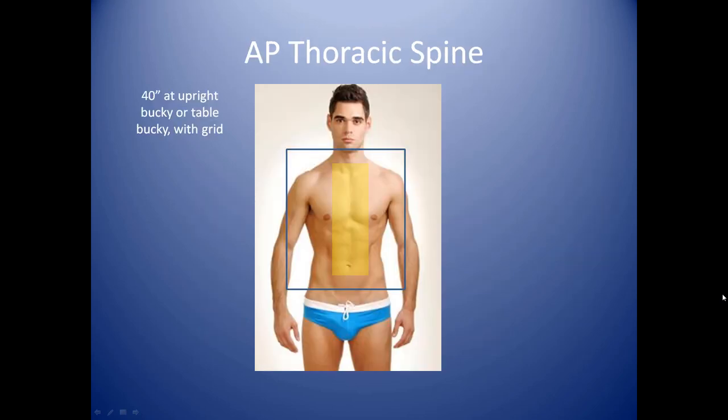The AP thoracic spine simulates a chest x-ray — it's virtually the same thing, except we're not shooting posterior to anterior. We're shooting anterior to posterior, or front to back. We're preferably using 40 inches at the upright bucky with a grid. The essential anatomy is located between the manubrial notch — right there, just below the throat — and just below the belly button, which is where you want to include your light.